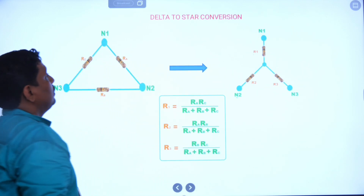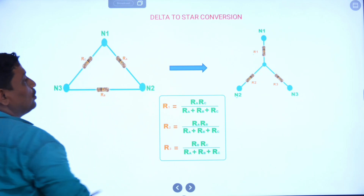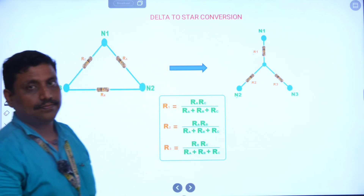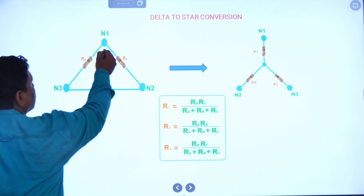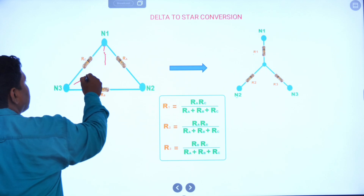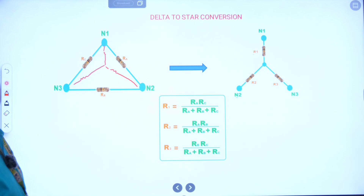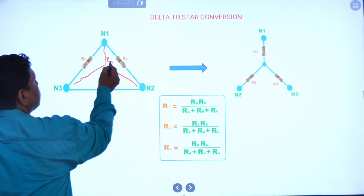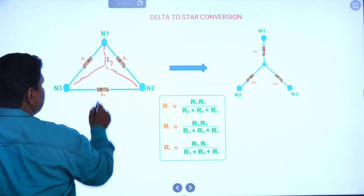Similarly, to convert delta to star: the known parameter is delta and the unknown parameter is star. The unknown star can be drawn in the inner of the delta to find the star resistance. For example, R1 is nothing but the product of adjacent delta resistance.